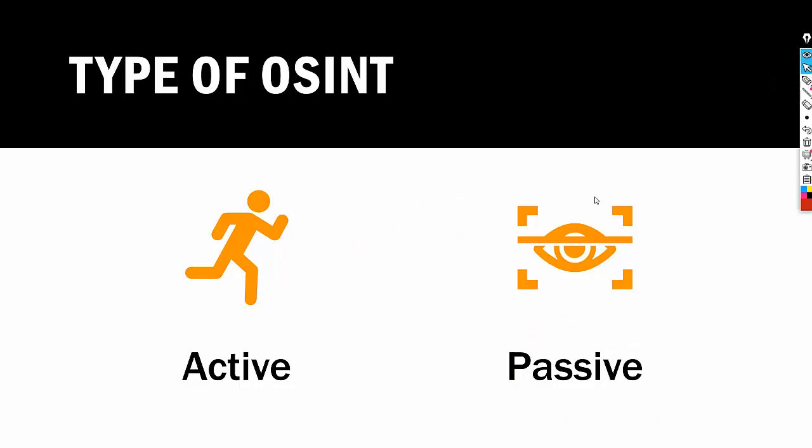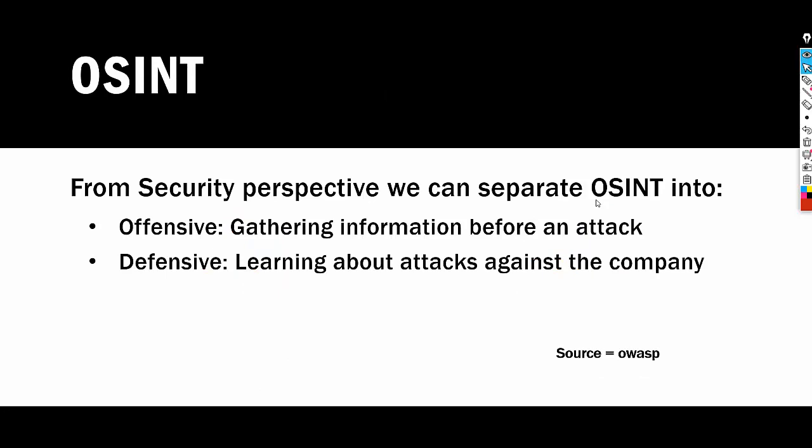There is a myth that OSINT is only for information gathering, which is wrong. From a security perspective, OSINT can be separated into two categories: offensive and defensive. Offensive means gathering information before an attack — a hacker collecting information to hack a target. Defensive means a security team collecting information about threats from multiple third-party websites to predict patterns and threats. Within cybersecurity, OSINT can also be used to measure risk to your organization and to understand attacker techniques, tactics, and targets.